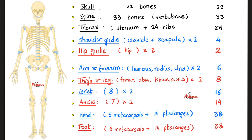The thoracic cage has 1 sternum in the midline and 24 ribs — 12 on the right and 12 on the left — for a total of 25. The shoulder girdle has a clavicle and scapula on each side, totaling 4 bones. The hip girdle or pelvic girdle has 1 hip bone on the right and 1 hip bone on the left, for a total of 2.